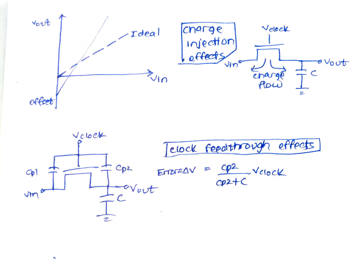Sample and hold circuits have problems which is due to charge injection effect and clock feedthrough. Charge injection is seen when MOSFET is turned off. The charge in the channel flows towards the drain and source side. The charges flowing towards the source or the capacitor side charges the capacitor.